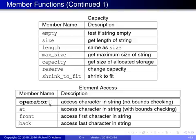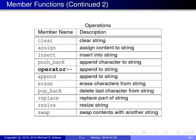The element access functions include: the subscripting operator[], which provides access to individual characters without bounds checking — using an out-of-range index causes undefined behavior; at(), which is identical but performs bounds checking and throws an exception on failure; and front() and back(), which return references to the first and last characters respectively.